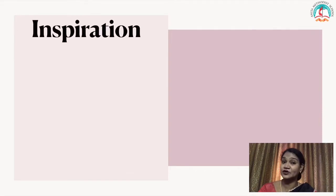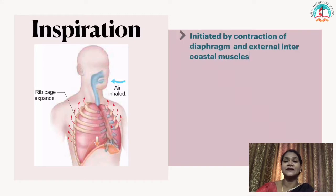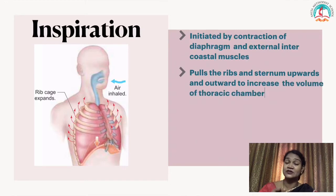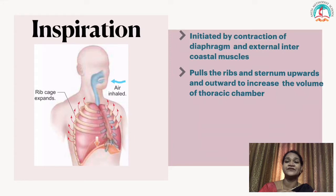The first phase of breathing is inspiration — inhaling atmospheric air into the lungs. Inspiration is initiated by the contraction of the diaphragm and the external intercostal muscles. The external intercostal muscles pull the ribs and sternum upwards. During inspiration, the ribs and sternum push upward and outward to increase the volume of the thoracic chamber, so it can accommodate the air inside the chest cavity.